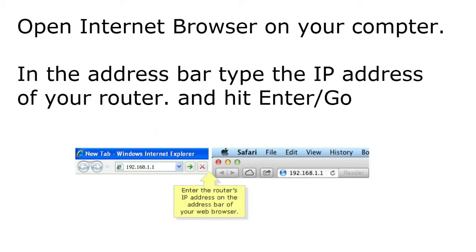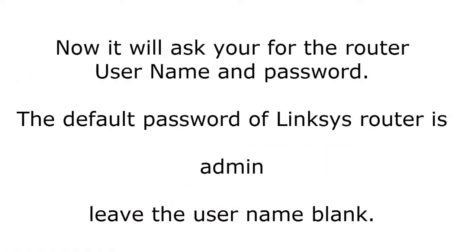Now you have the IP address of your Linksys router. Open an internet browser — Internet Explorer, Firefox, Safari, or any browser on your computer. In the address bar, type that IP address number; in this case 192.168.1.1, and hit Enter. It will ask you for the router password in order to log in to the setup page.